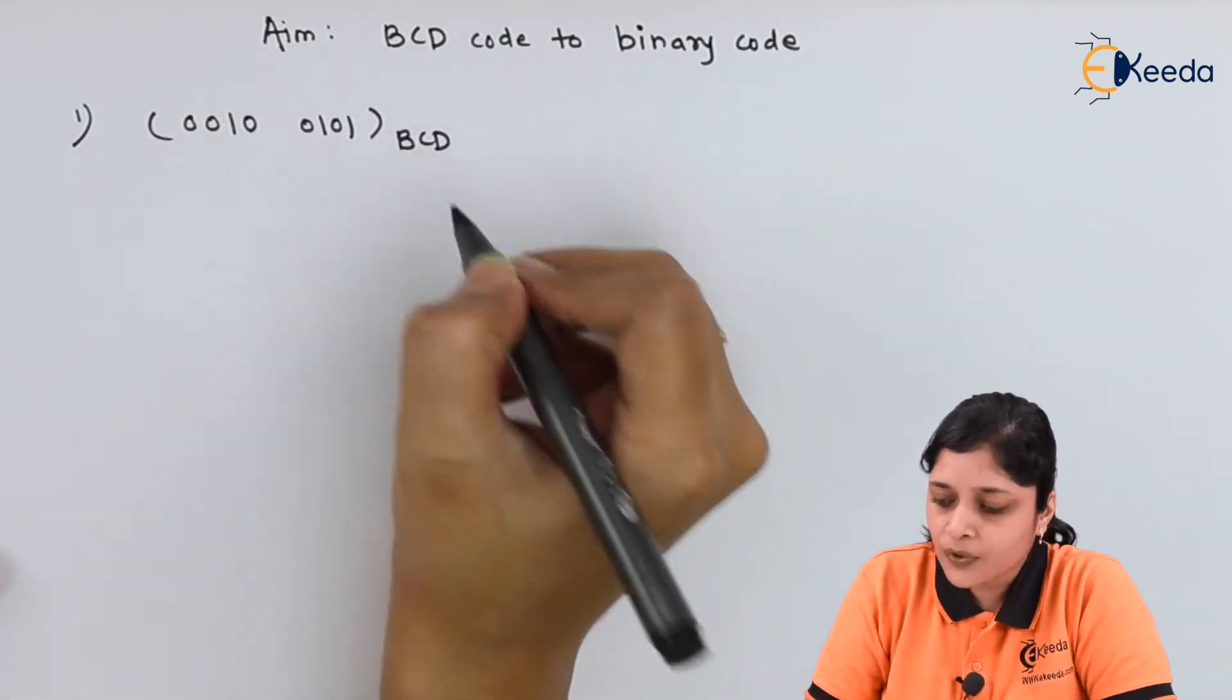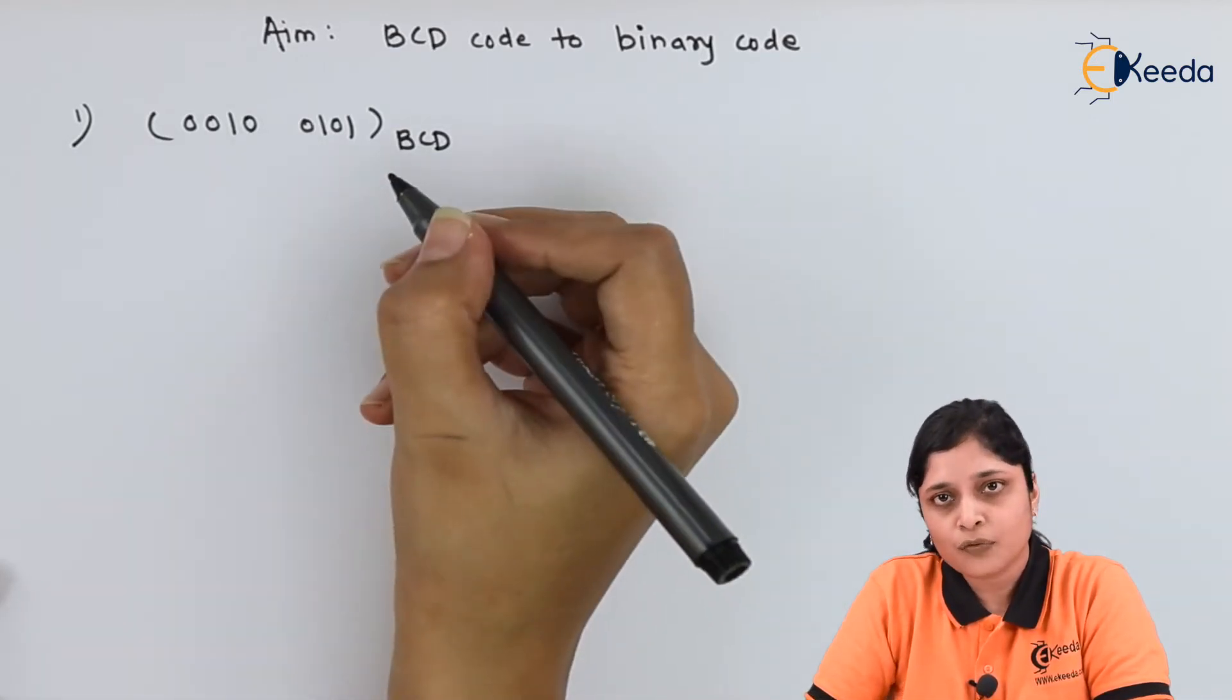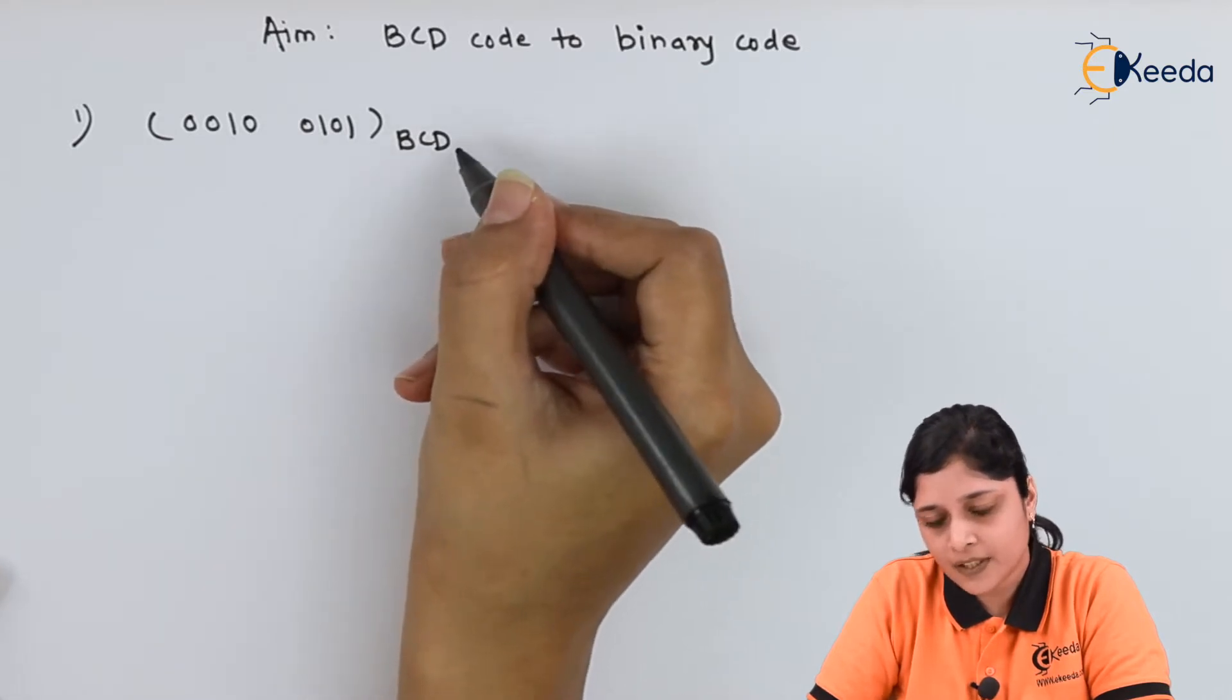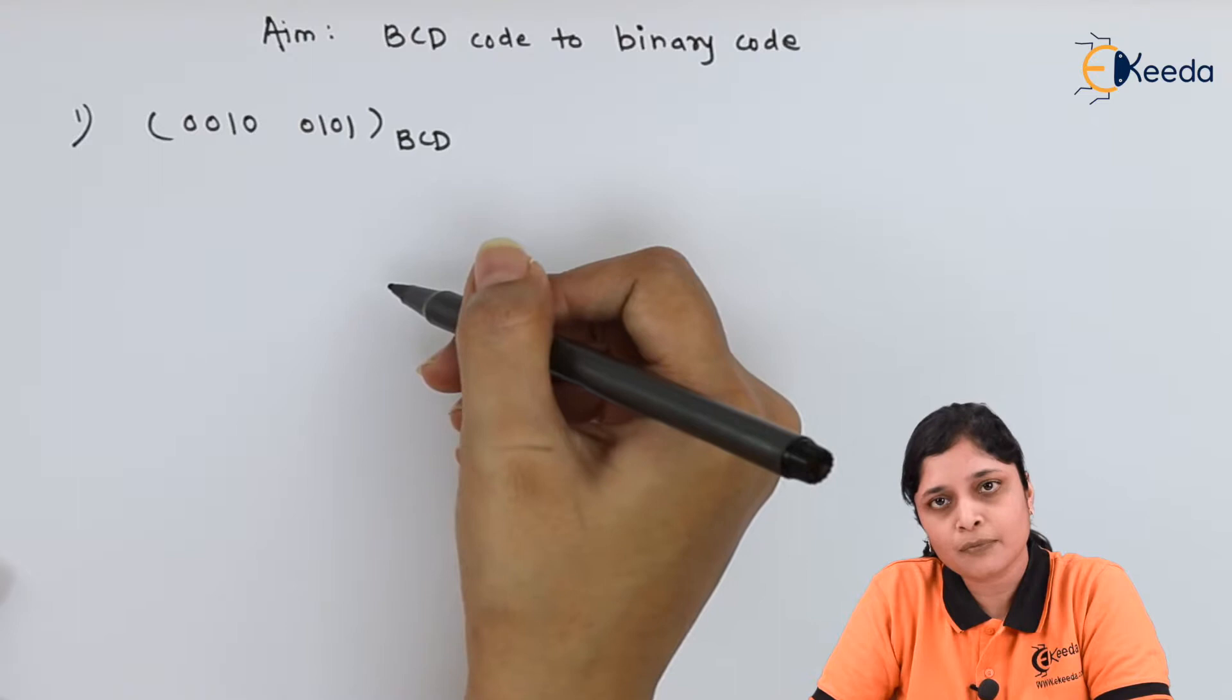Now to convert it into binary, you require two steps. First of all, you have to convert this BCD to decimal, and then apply the procedure to convert decimal to binary.